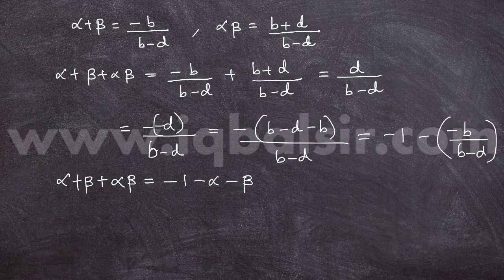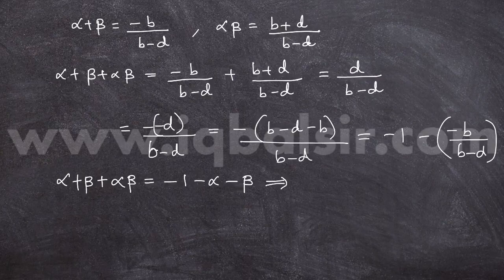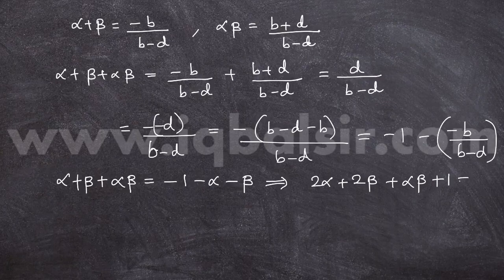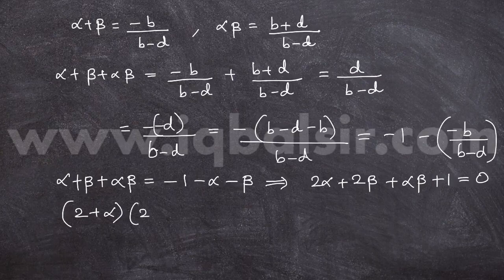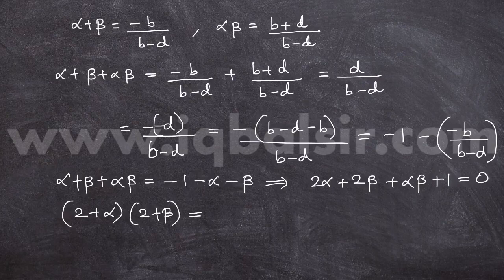Now we need to think. We have one more piece of information: alpha and beta are integer roots. Let's bring everything to the LHS: 2·alpha + 2·beta + alpha·beta + 1 = 0. The first thing that comes to mind is to factorize the LHS as (2 + alpha)(2 + beta). But the constant term on LHS is 1 while the factored form gives 4, so we write 3 on the RHS. Now we have (2 + alpha)(2 + beta) = 3.